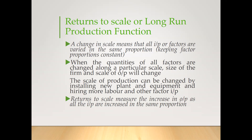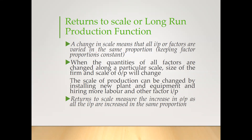Why we are calling it return to scale — because here the entire scale keeps on changing. A scale means all four factors of production are variable. Nothing is fixed in the long run. A change in scale means all inputs or factors are varied, and here in the same proportion, keeping factor proportion constant.